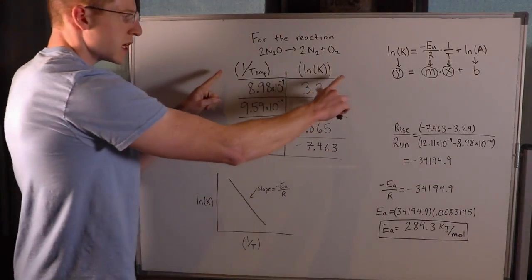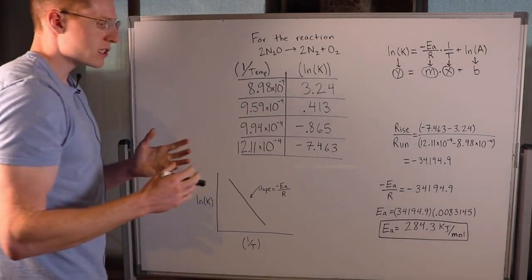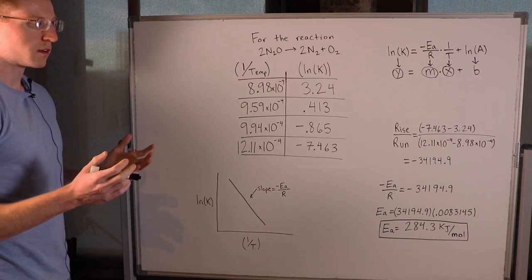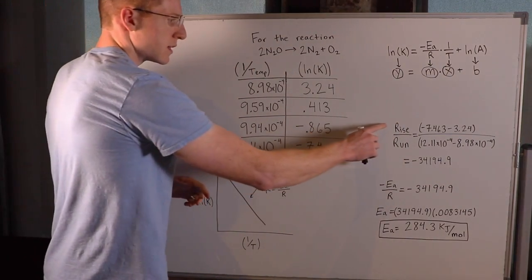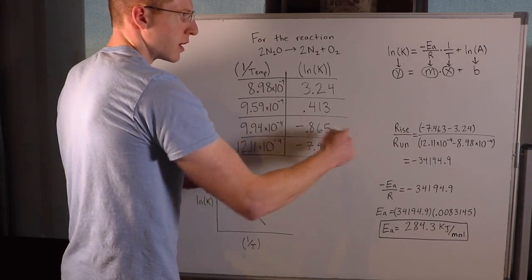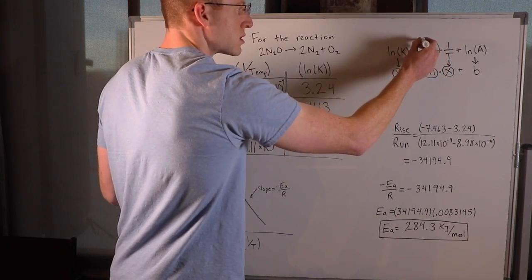If we have a table of data and need to solve for the activation energy, we can do it like this. We take rise over run to get our slope.